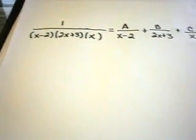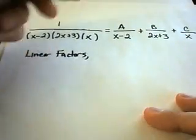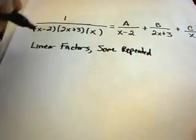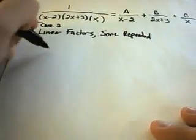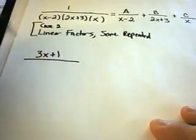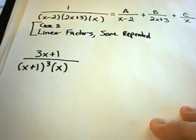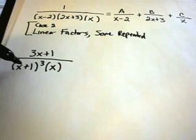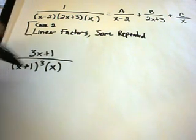Case 2 is when you have linear factors but some are repeated. Suppose your rational function is (3x+1) over (x+1)³ times x. Notice I've got a linear factor x+1, but it's raised to the third power. The whole denominator is not a linear polynomial, but when factored, the individual factors are linear. When you have a repeated linear factor you build up to it progressively.